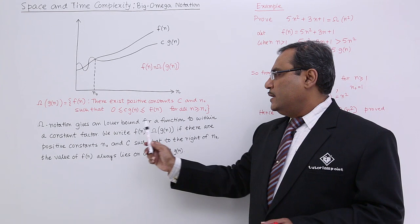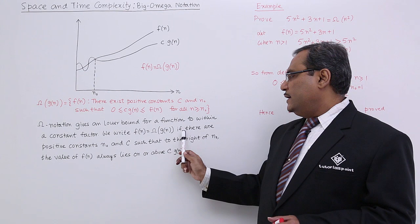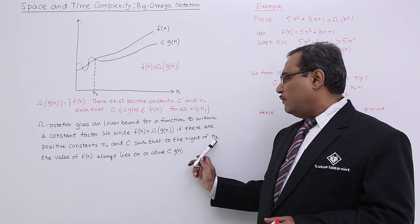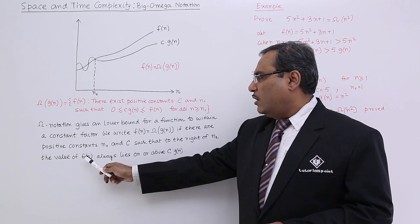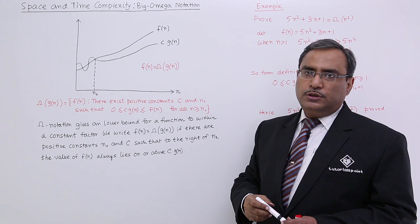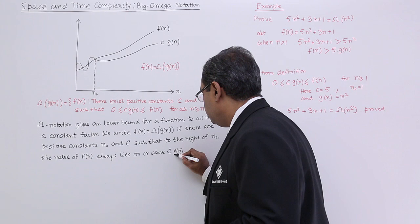Big omega notation gives a lower bound for a function to within a constant factor. We write f of n is equal to big omega of g of n if there are positive constants n0 and c such that to the right of n0, the value of f of n always lies on or above c into g of n. That has been written in text.